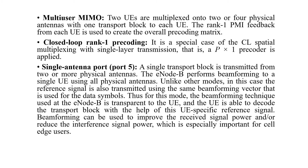Closed loop rank-1 precoding is a special case of closed loop spatial multiplexing with a single layer transmission — that is, a P×1 precoder is applied. Single antenna port using port 5: a single transport block is transmitted from two or more physical antennas, and the E-Node performs beamforming to a single user equipment using all physical antennas. In this mode, the reference signal is transmitted using the same beamforming vector used for data symbols, making the beamforming technique transparent to the UE. Beamforming can improve received signal power and reduce interference, which is especially important for cell-edge users.